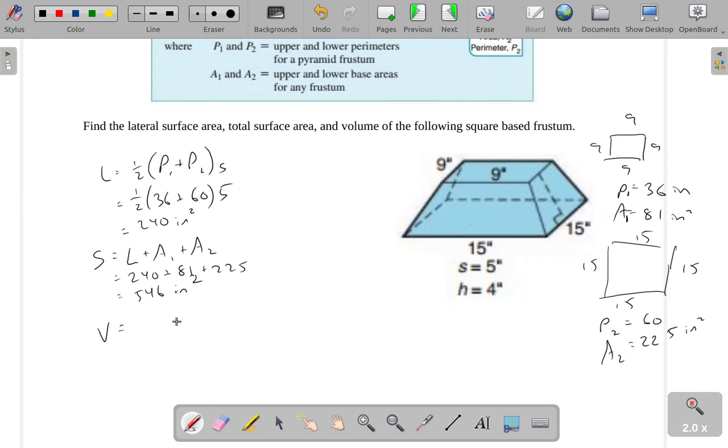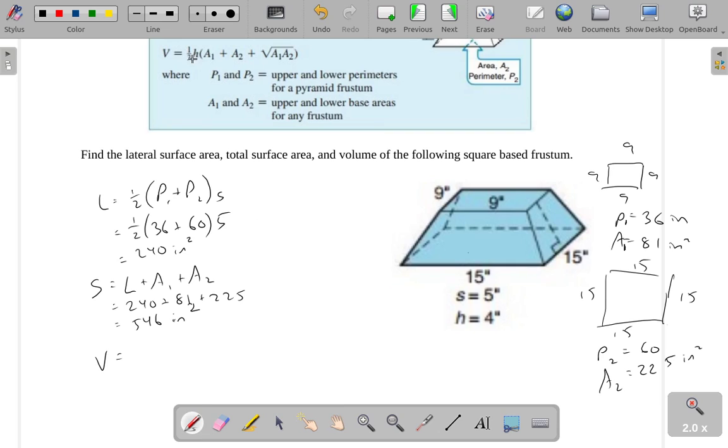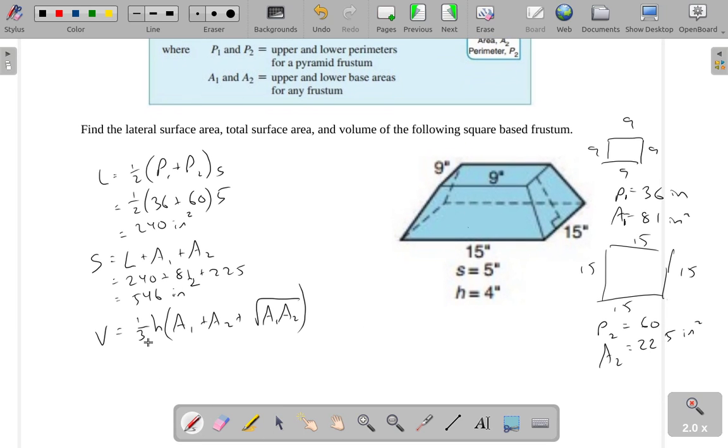All right, the last thing I'll find on this one is the volume. So the volume formula is a little bit complicated. We get 1/3 times the height, parentheses, A1 plus A2 plus the square root of A1 times A2. All right, so 1/3, we know what that is. The height, we know what that is, that's 4. Area 1 is 81. Area 2 is 225. The square root of 81 times 225, I don't know what that is, but I'll just put that in there. And so this will give me the volume of this whole thing.